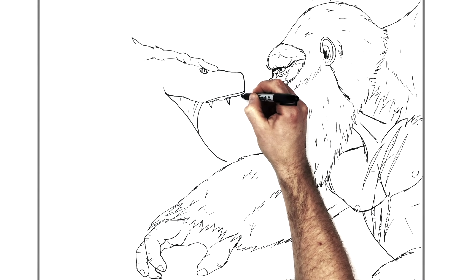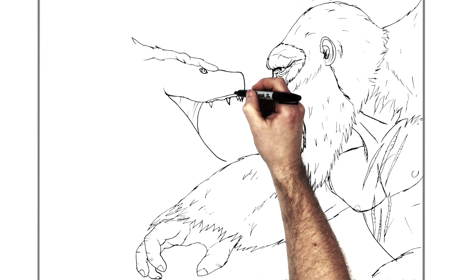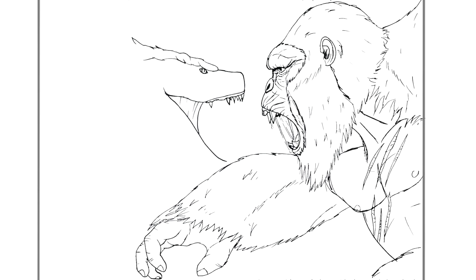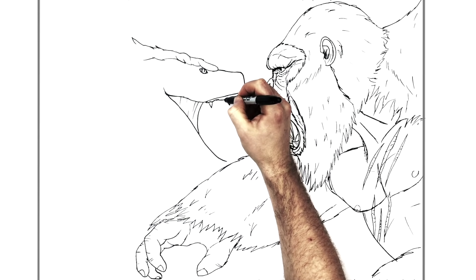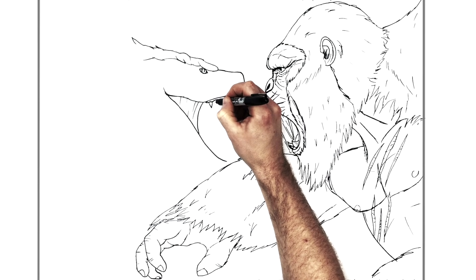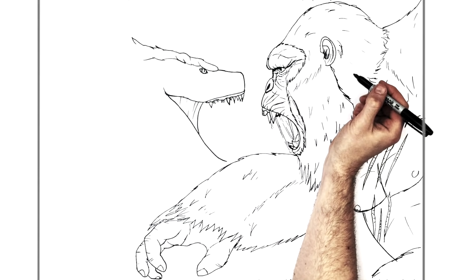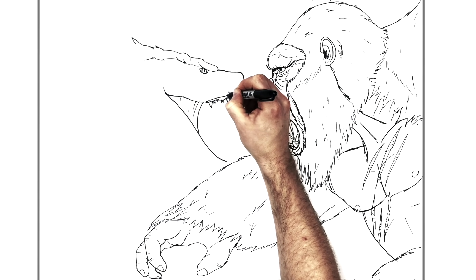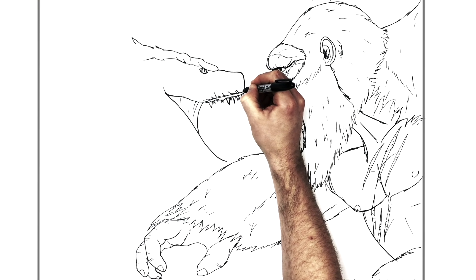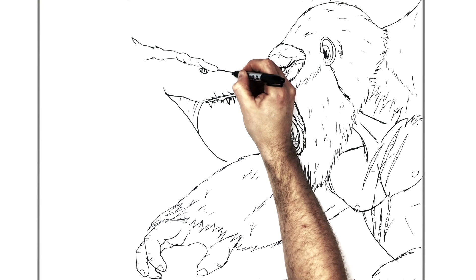Godzilla has a gum line — just a bumpy line coming across — then gnarly teeth coming down here, one by one. There's no rhyme or reason to it: big ones mixed with small ones, front ones are kind of big. I'll do three like that, and then in between some small ones because you can see some at the back as well. Really small ones here — they're tiny.